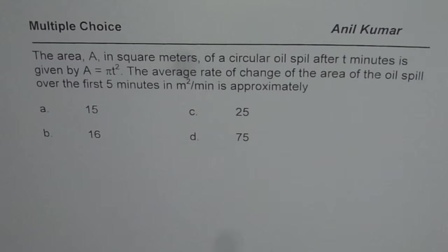I'm Anil Kumar and here is a multiple choice question on rate of change. The question is, the area A in square meters of a circular oil spill after T minutes is given by the formula A equals pi T square. The average rate of change of the area of the oil spill over the first 5 minutes in meters per minute is approximately, you are given 4 choices.